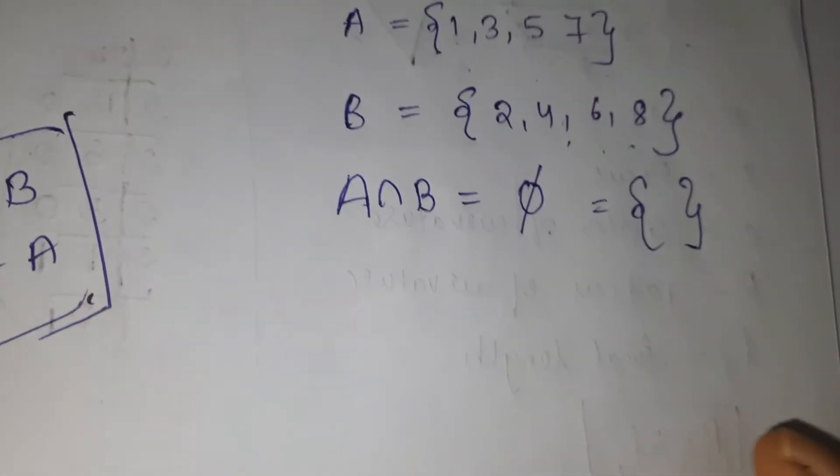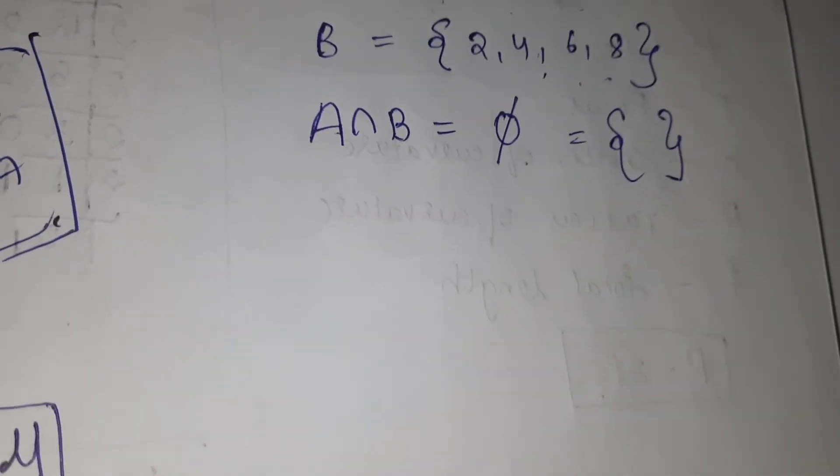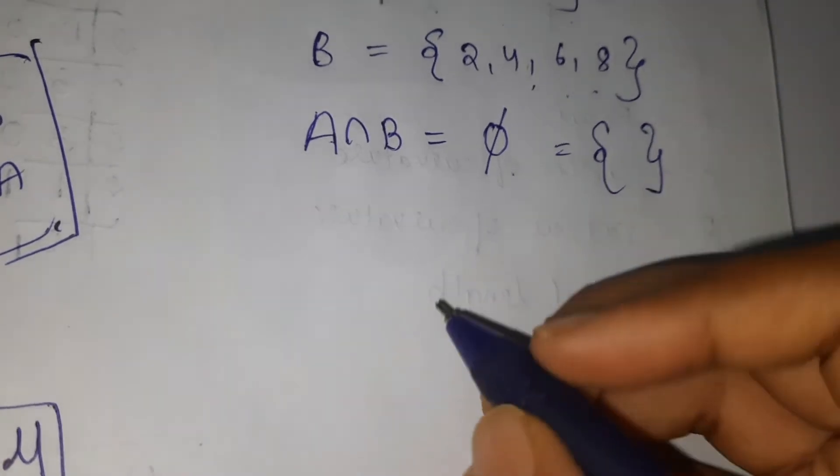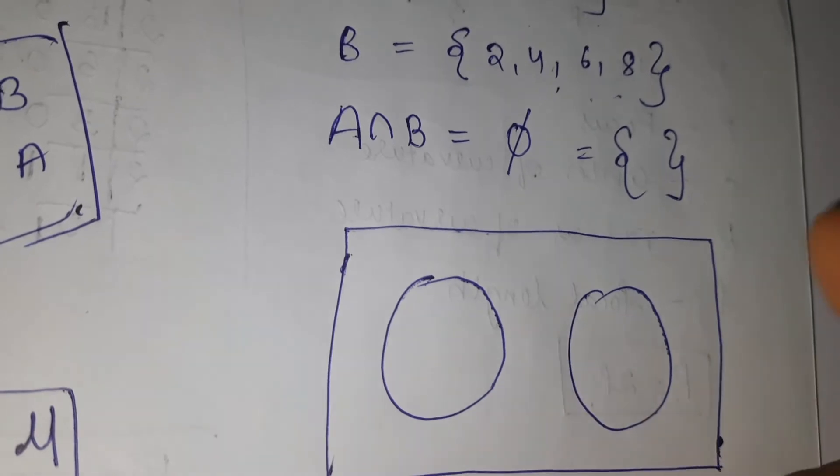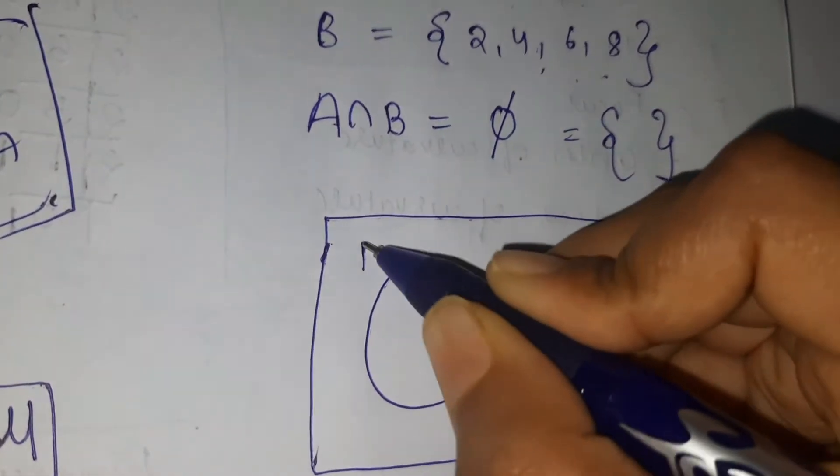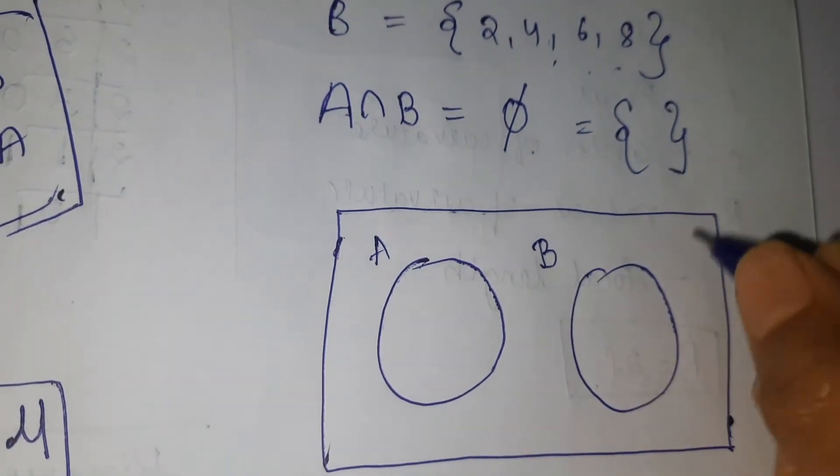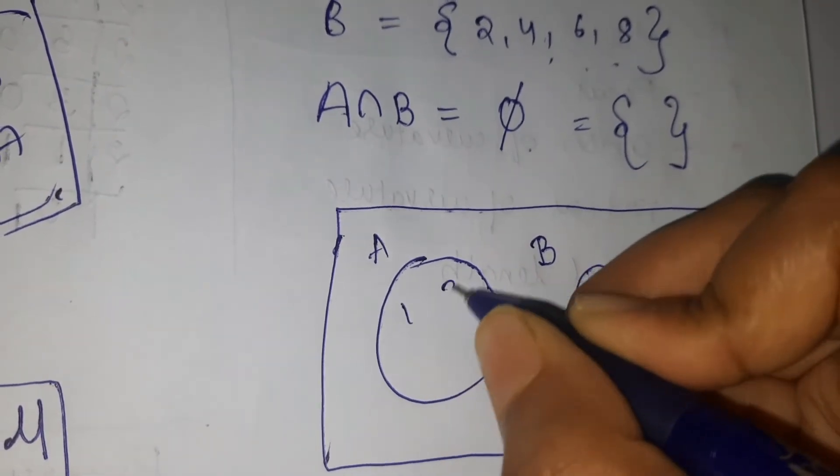So let's do this with a Venn diagram. I'm going to show you the Venn diagram. See here, they are separated because there's no connection between them. That's why I've drawn them separately. Here I'm filling in 1, 3, 5, 7.